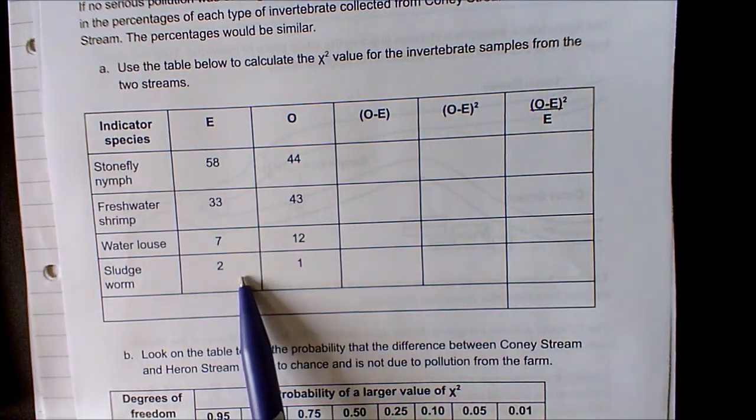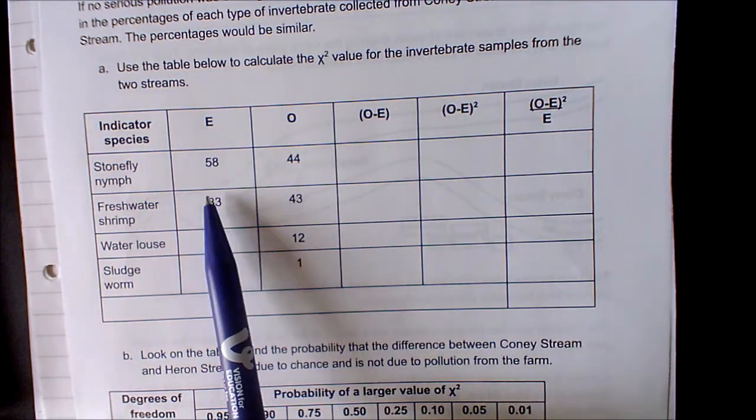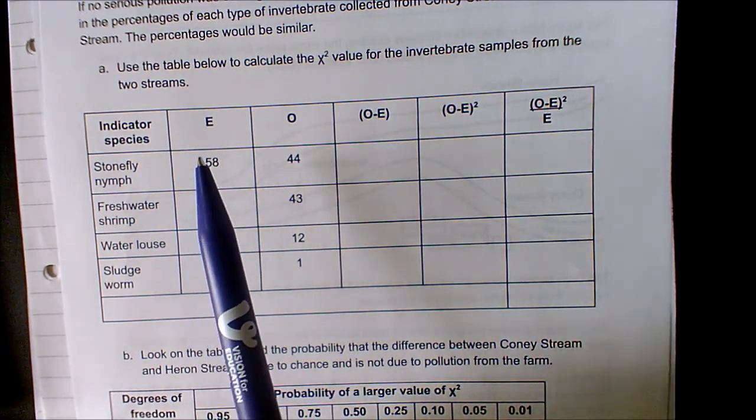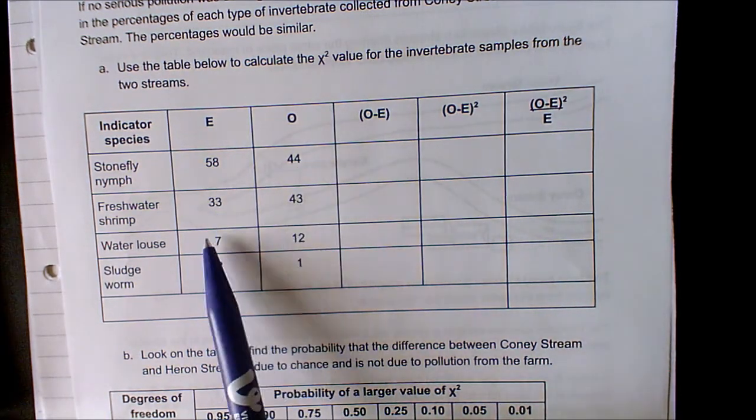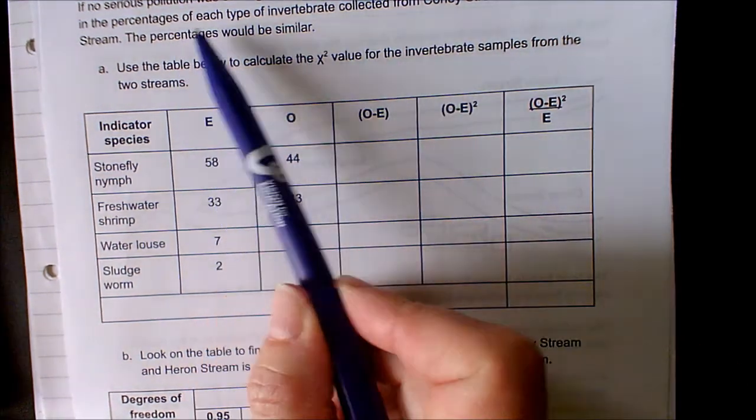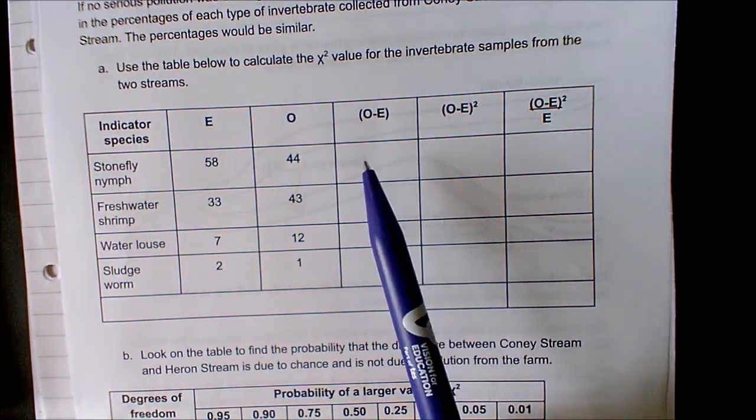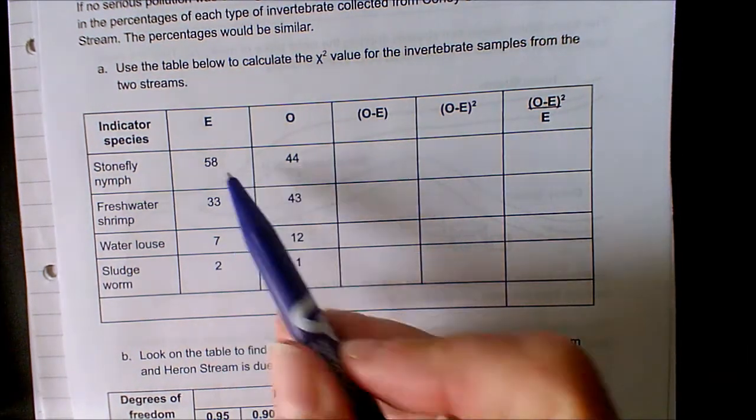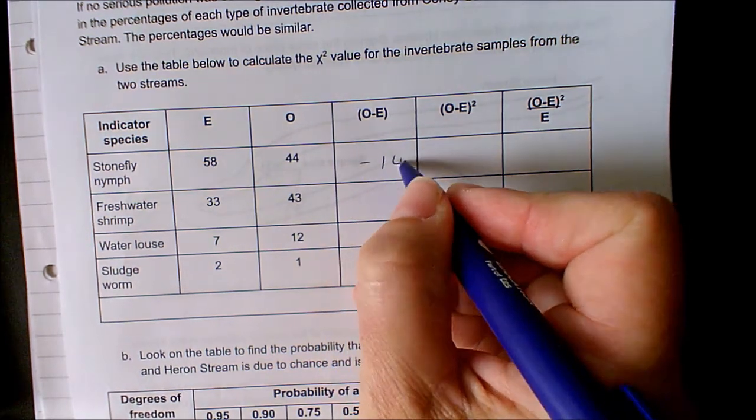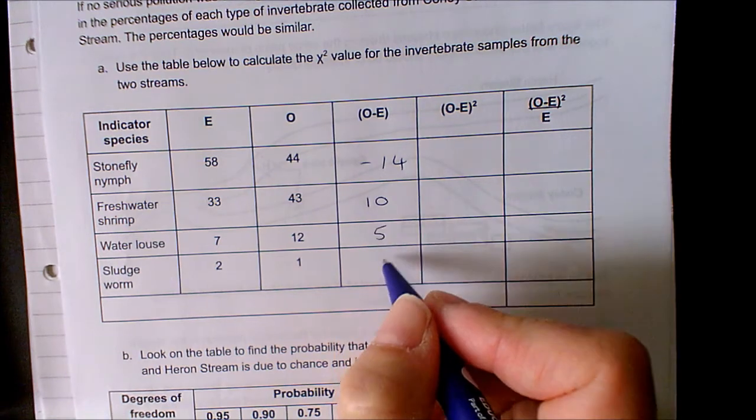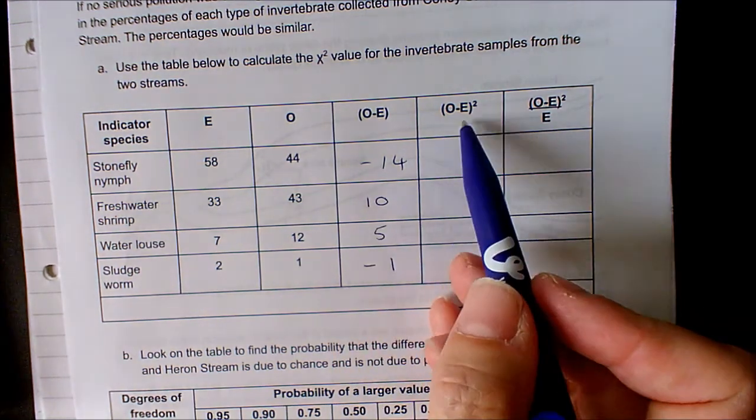The expected values—they've used the Heron Stream because they're saying we would expect to have the same number in each if there was no difference in the two streams. Now we have to do the calculations. O minus E, observed minus expected: -14, +10, +5, -1.